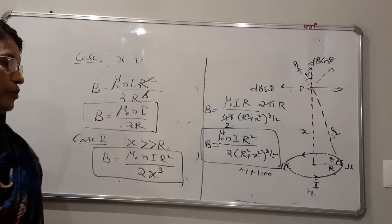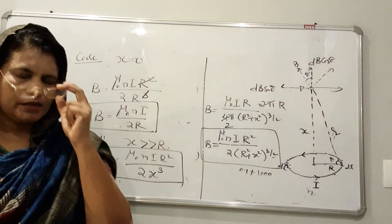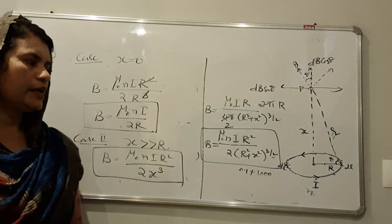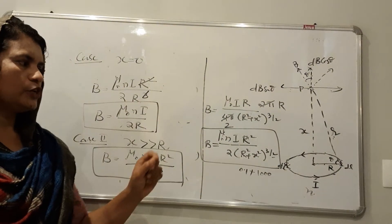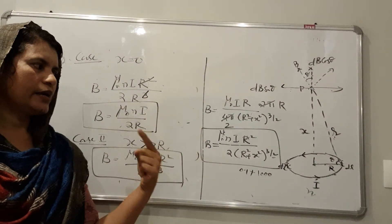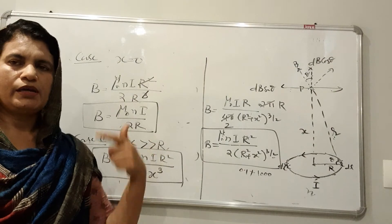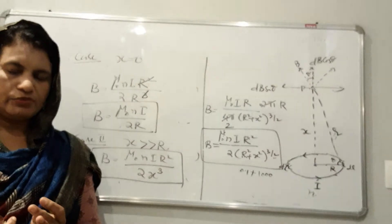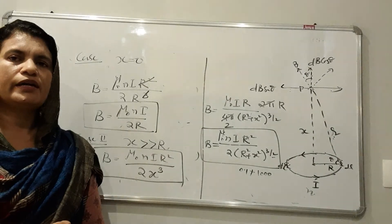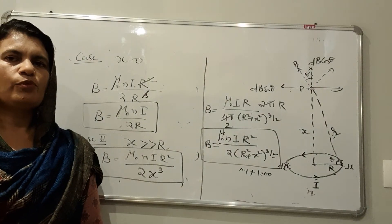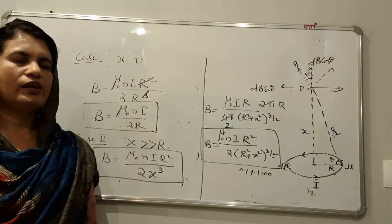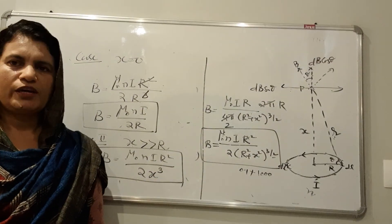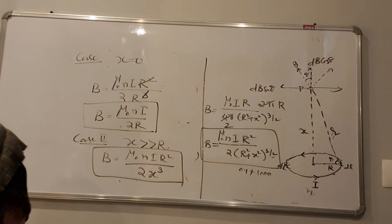We have derived the equation for magnetic field intensity at a point due to a current-carrying loop by applying Biot-Savart's Law. This is the first video, and there is one more video which will be uploaded separately. Thank you.